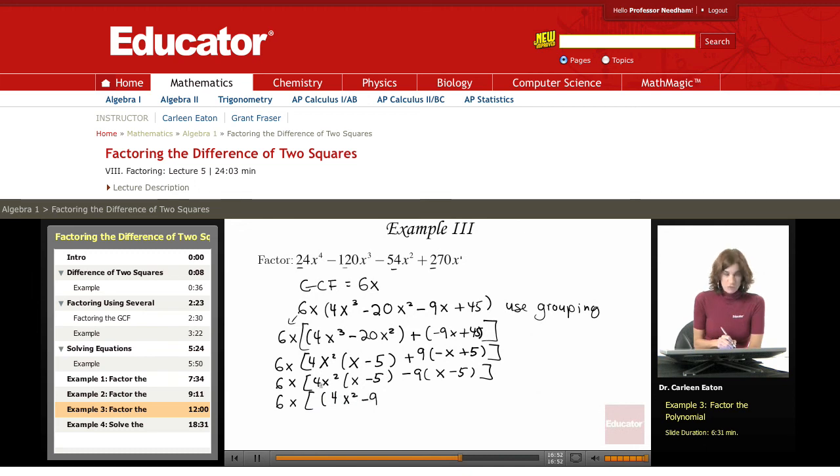So, I'm grouping the 4x² minus 9, and then I'm just factoring out x minus 5. So, I end up with, again, bringing that greatest common factor along the whole time, 6x times 4x² minus 9 times x minus 5.